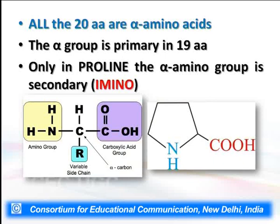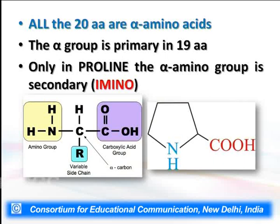Of the 20 alpha amino acids, 19 have a primary amino group — that is, the NH₂ group. Only one amino acid, proline, has a secondary alpha amino group known as an imino group. The difference is: an amino group means the functional group is NH₂ (primary), whereas an imino group is NH — a secondary amino group.